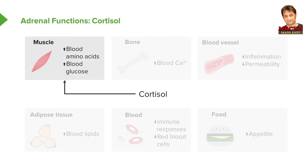The functions of cortisol: from muscle, cortisol will release glucose into the blood and will also increase the release of amino acids into the blood, which increases both blood amino acid levels and blood glucose levels. Bone also will be stimulated to release calcium, increasing blood calcium levels.